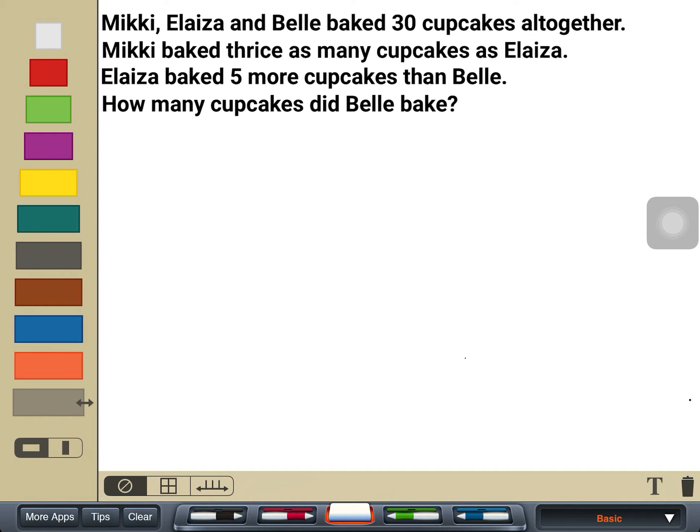I know that Eliza baked 5 more cupcakes than Belle. That would mean that Eliza would have a longer bar than Belle. So let me just put it here. Belle will be white, Eliza green. I will just label it as B for Belle, E for Eliza. And we know that there are 5 more cupcakes, so let me just label this as 5 more.